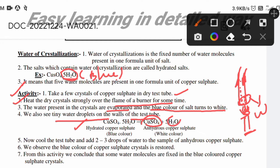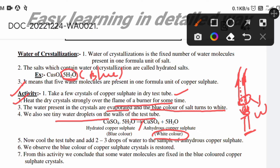So we have five water molecules separating out. We call CuSO4·5H2O hydrated copper sulfate, which is blue in color. But whenever you heat it up, it becomes white. We call this anhydrous copper sulfate — CuSO4 is anhydrous copper sulfate.